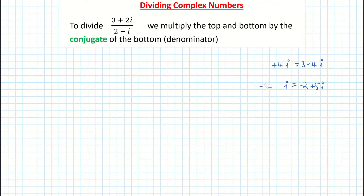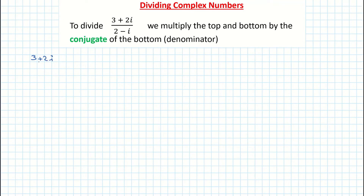What we're doing here is multiplying the top and the bottom of the fraction by the conjugate of the bottom of the fraction — the denominator. It sounds a bit confusing, but let's have a look at what it means. I'm going to write out my complex number: 3 plus 2i all over 2 minus i. I'm going to put them in brackets because I need to multiply them by something, and multiplying in maths means brackets.